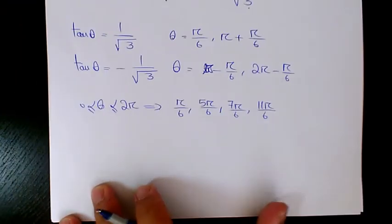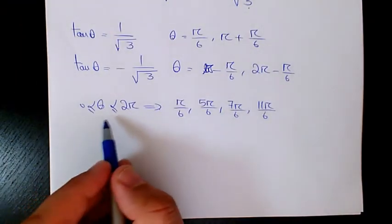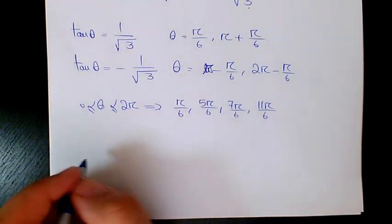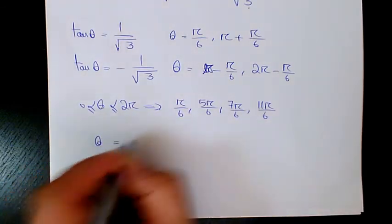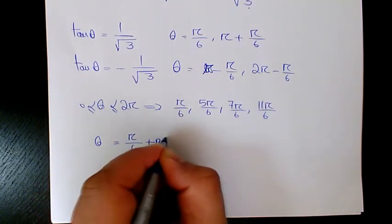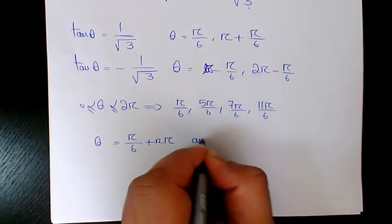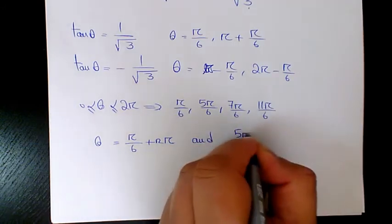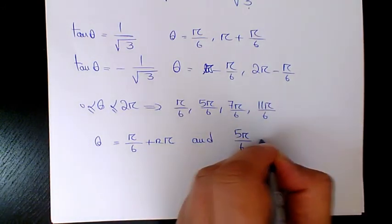However, if you're looking for the general solution, that's going to be pi over 6 plus n pi and 5 pi over 6 plus n pi.